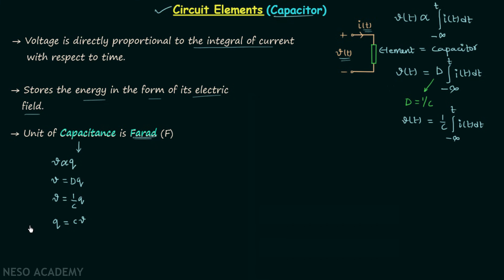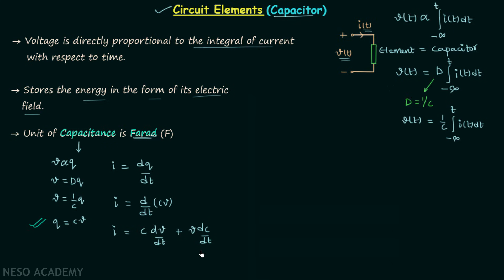We also know that current i = dq/dt, therefore we can substitute CV in place of q. So i = d/dt(CV), and using the rule of differentiation we get i = C dv/dt + V dc/dt. Since capacitance is a constant, dc/dt equals zero, and hence we finally get the important result: current i = C dv/dt.